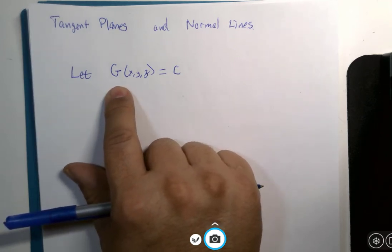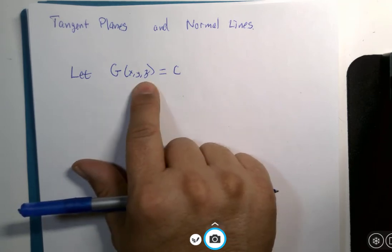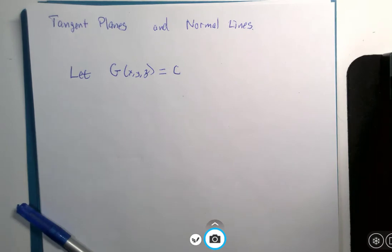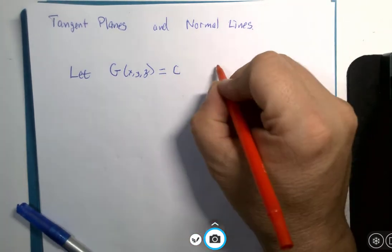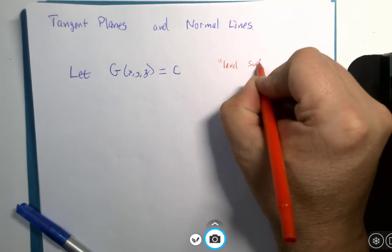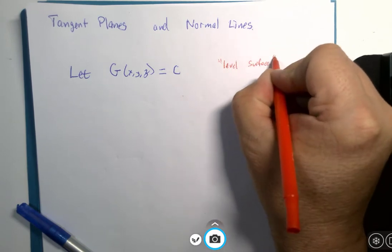So let's suppose we have a function with three variables that's equal to a constant. We just learned that if there's three variables equal to a constant, we could call that a level surface, something that's in three dimensions.